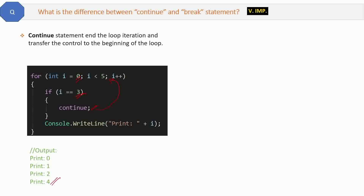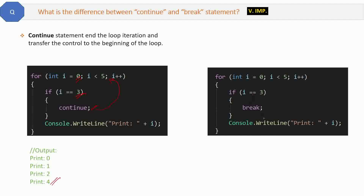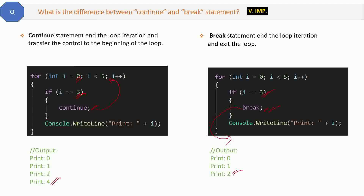For the 'break' keyword — the same code but with break instead of continue. When i equals three and the break keyword is encountered, it does not go back to the top of the loop. Instead, break ends the loop iteration and exits the loop entirely. The output stops after printing two because the break keyword exits the loop and no further loop execution happens.